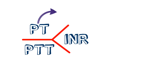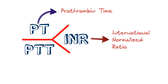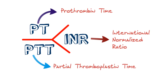PT stands for prothrombin time. INR is the International Normalized Ratio. And finally, PTT is your partial thromboplastin time. Keep in mind, your INR is a form of a PT, but it differs in the sense that the normal values for an INR have been agreed on across the world, among all labs, while the PT can vary from lab to lab and from hospital to hospital.